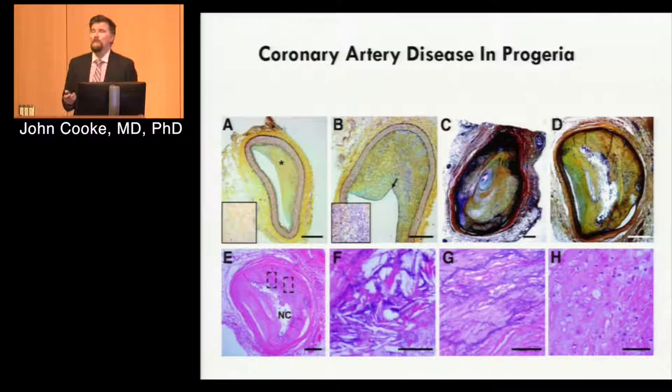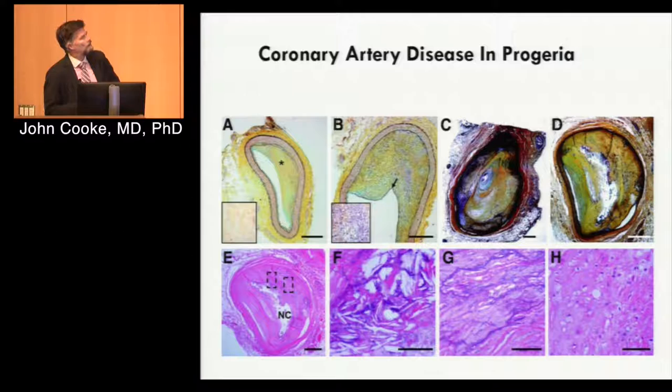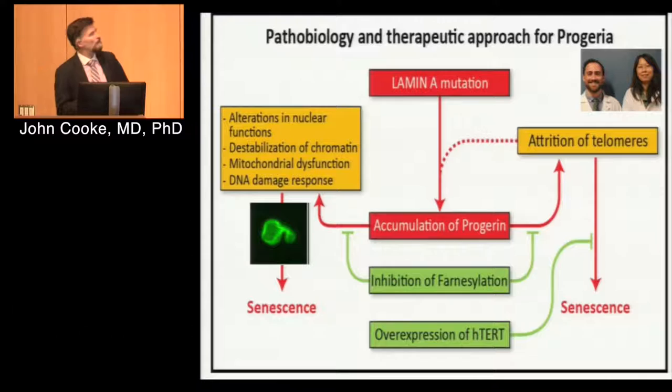This is what their coronary arteries look like. These are heavily diseased coronary arteries from these children — what an unhealthy 70- or 80-year-old person might look like with respect to coronary arteries. They get tremendous atherosclerosis. It's a little bit different from garden-variety atherosclerosis in that there's a little more loss of the media, but otherwise it's fairly similar to the atherosclerosis we see in our older patients.